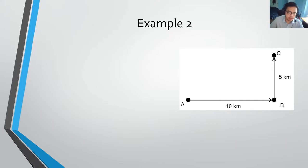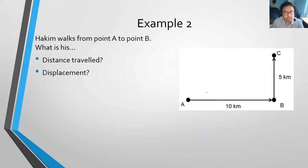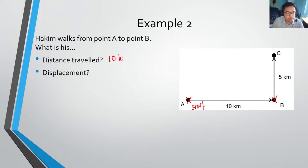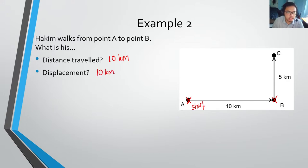We're moving on to example two. Hakim walks from point A, the starting position, to point B. What is his distance traveled? From A to B, Hakim has traveled 10 kilometers in total. What about his displacement — his change in position? He started from A and moved 10 kilometers to the east. His displacement has the same magnitude as his distance, 10 kilometers, but remember displacement is a vector, so we have to write down its direction: 10 kilometers east.